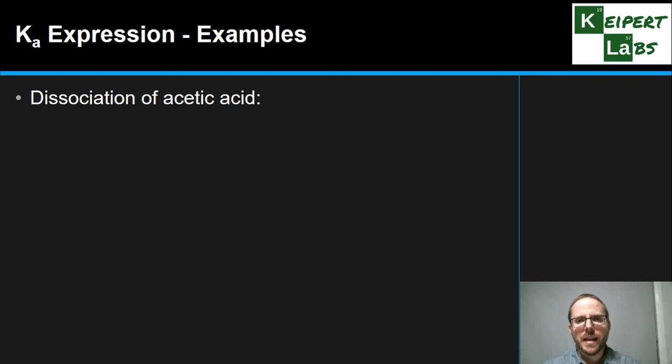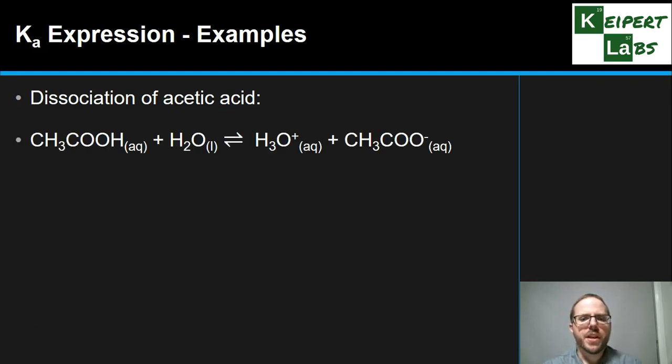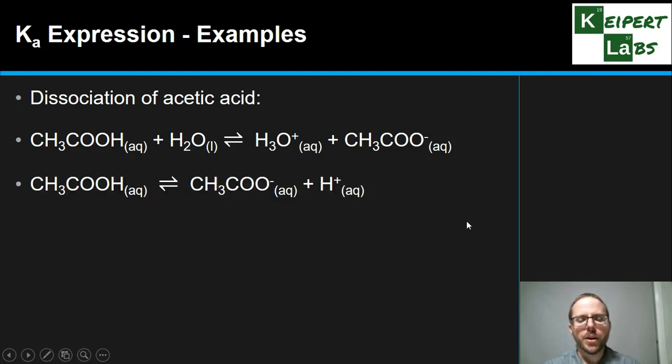So let's talk about acetic acid. So its dissociation here, we've got this equation going from acetic acid to the acetate ion. If we're going to simplify this equation like we were just talking about before, this is what we see. So we're forming acetate and then H⁺. So our Ka expression looks like this, where we've got the acetate ion and the H⁺ concentration on top and acetic acid concentration on the bottom.